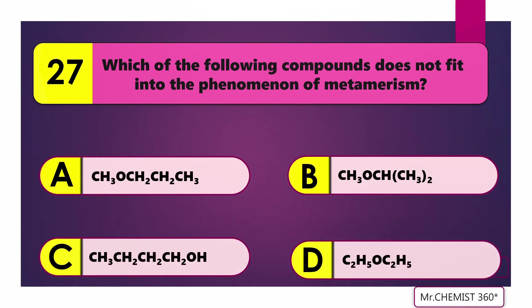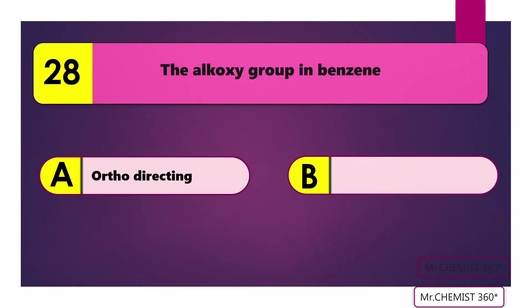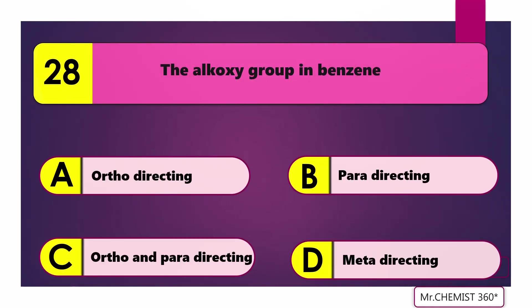Question 27: Which of the following compounds does not fit into the phenomenon of metamerism? The alkoxy group in benzene is the phenoxy group.